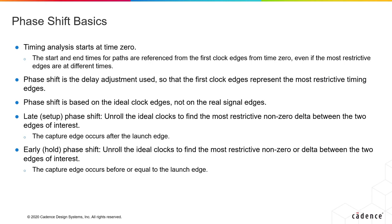Let's look at how phase shift works. Phase shift is based on ideal clock edges and not on the real signal edges. First identify the launch clock and capture clocks. Then start your timing analysis at time 0. Identify the worst case launch and capture after unrolling the clocks — most likely these most restrictive edges are not in the first cycle. But you can visualize that worst case scenario as if it happens in the very first clock cycle by shifting the capture clock until the same restrictive transfer also happens in the first cycle. Then you record the amount of shifting you did to the capture clock as phase shift. Thus, phase shift can also be defined as the delay adjustment used so that the first clock cycle edges represent the most restrictive timing edges.